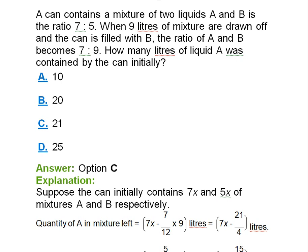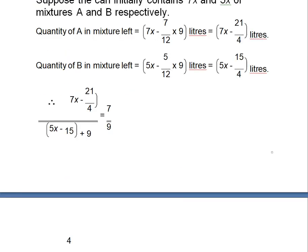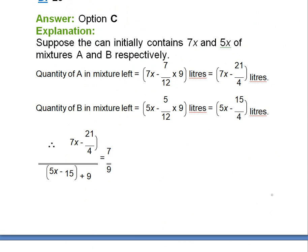The answer is option C. Now let's see how. Suppose the can initially contains 7x and 5x of the mixtures of A and B respectively. The quantity of A in mixture left is 7x minus 7/12 into 9, so that is 7x minus 21/4.